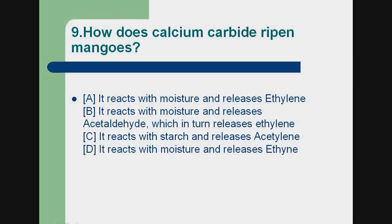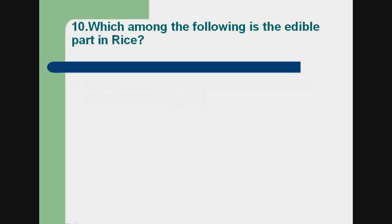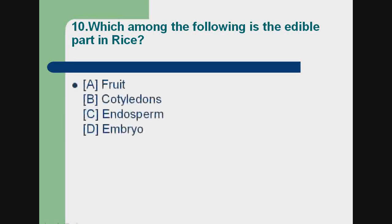Question 9: How does calcium carbide ripen mangoes? a) It reacts with moisture and releases ethylene. b) It reacts with moisture and releases acetaldehyde, which in turn releases ethylene. c) It reacts with starch and releases acetylene. d) It reacts with moisture and releases ethylene. Correct answer: a) it reacts with moisture and releases ethylene. Question 10: Which among the following is the edible part in rice? a) fruit, b) cotyledons, c) endosperm, d) embryo. Correct answer: c) endosperm.